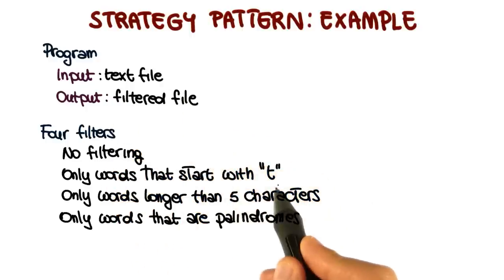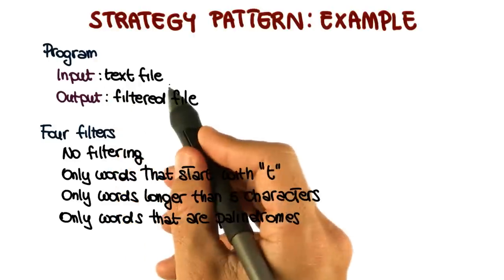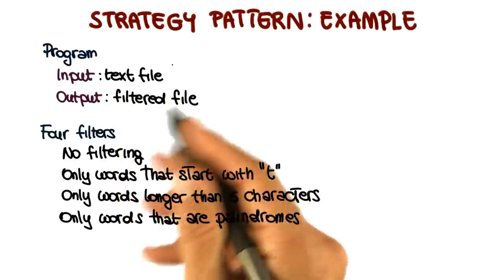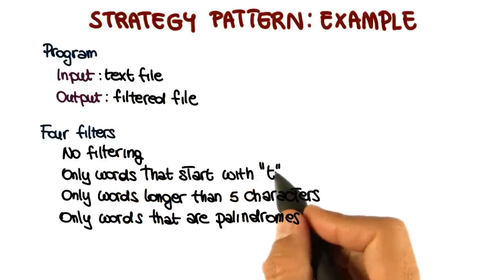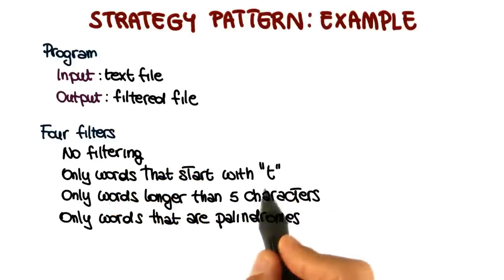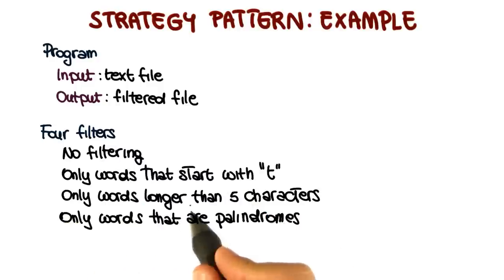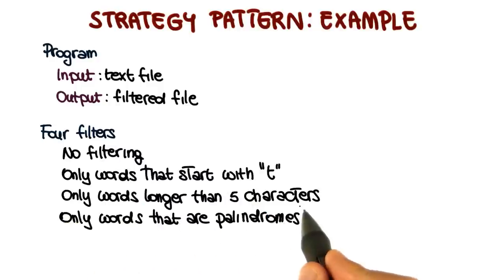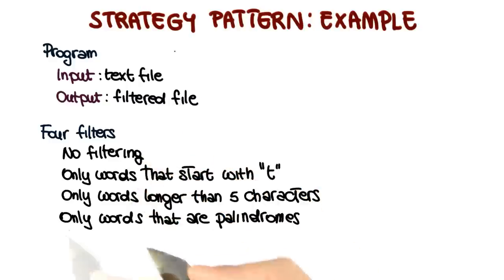The second filter will output only words that start with T, so it will take the text file and simply ignore all of the words that do not start with T. In the output we will have only those words that start with the letter T. The third filter will produce in the output only words that are longer than five characters, so all the other words will be simply disregarded.